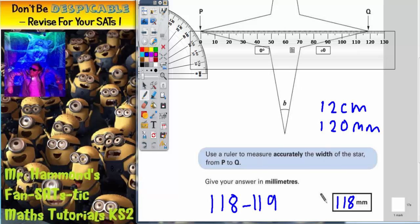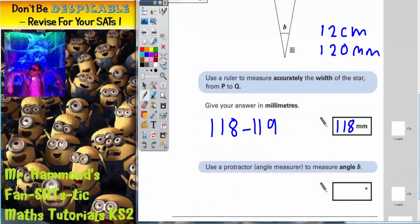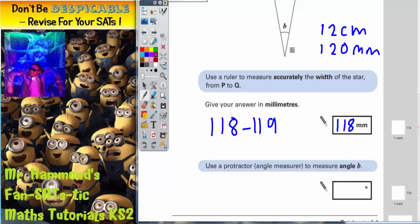Now let's scroll down and see what we've got to do for the second part of the question. It says use a protractor, which is a password for an angle measurer, to measure angle B.